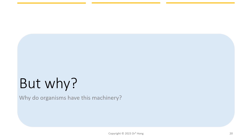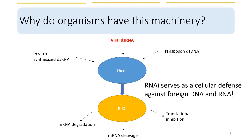But why do plants and animals have this RNA interference machinery in place? In addition to gene regulation, it serves as a cellular mechanism to defend against foreign DNA and RNA. RNA interference can target and degrade viral RNA, providing a defense mechanism against viral infections. It can also silence the expression of transposable elements — DNA sequences that can move around the genome and potentially cause mutations or genome instability. Lastly, RNA interference plays a critical role in regulating developmental processes, such as cell differentiation and patterning, by controlling the expression of key genes.